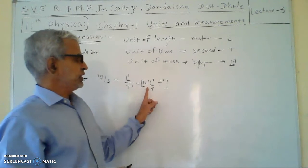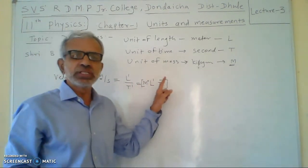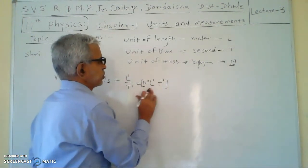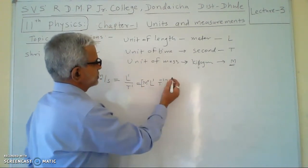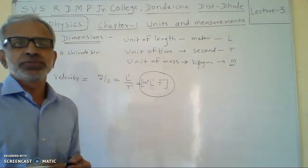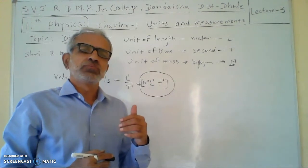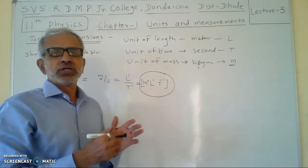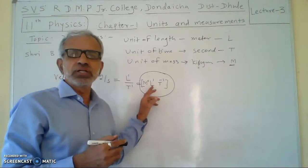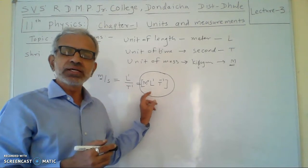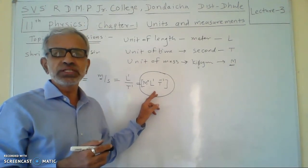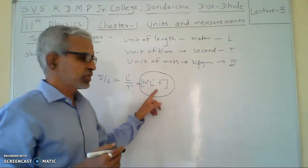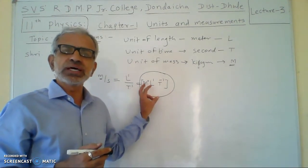When we write dimensions, we write them in square brackets and all capital letters. There is no comma and there is no full stop. The expression which gives the relation between the powers and fundamental units is called a dimensional formula.